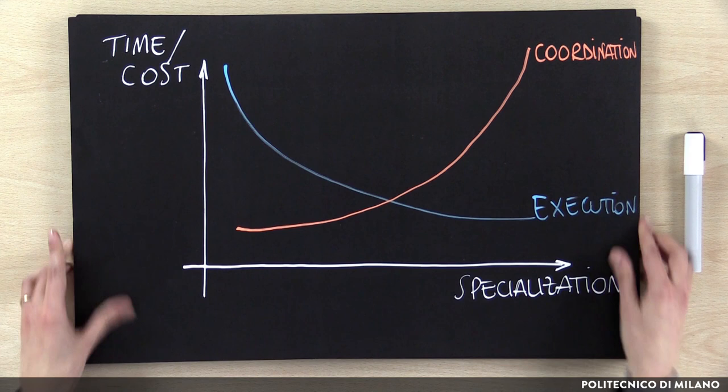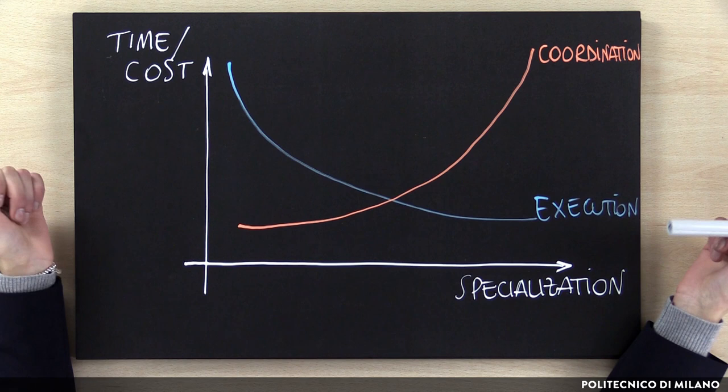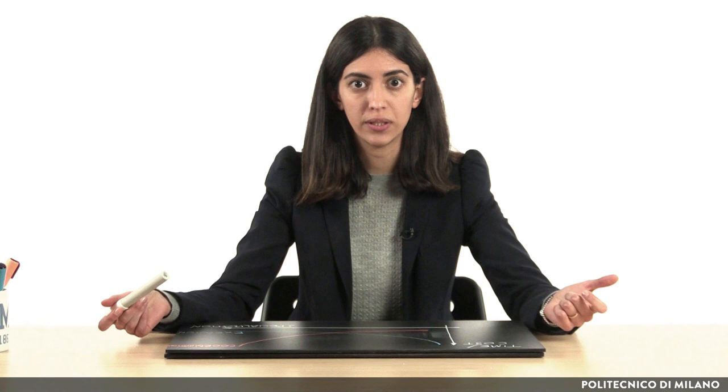The higher the level of specialization, the lower the execution cost for each unit, thanks to the advantages of economies of scale and economies of scope. But on the other hand, the higher the specialization of people, the higher the need to coordinate those people to obtain a coherent output, and consequently the higher the related cost of coordination. A good organizational design needs to find the optimal balance between these two concepts.